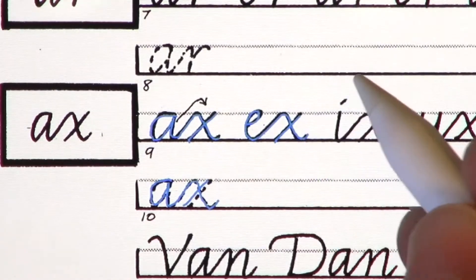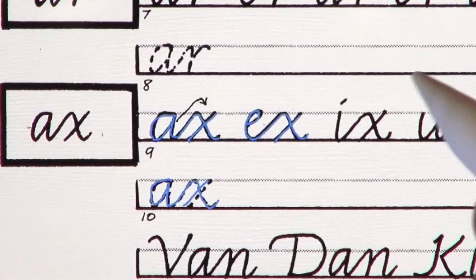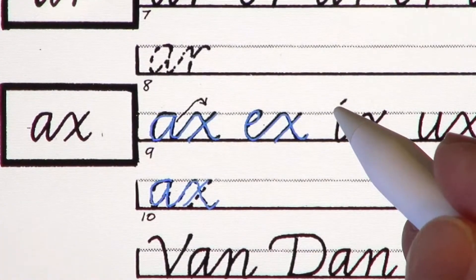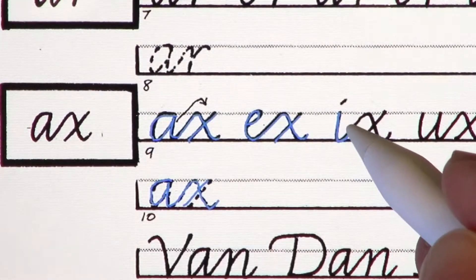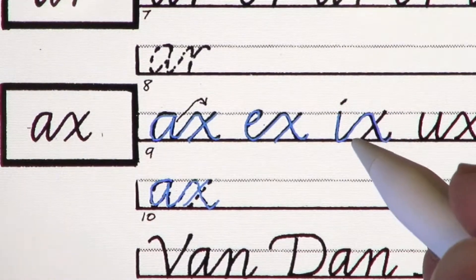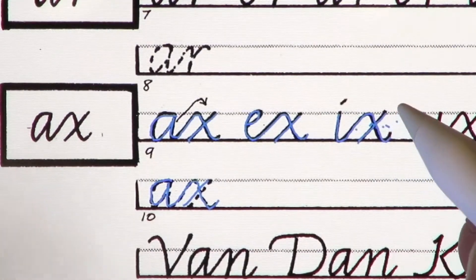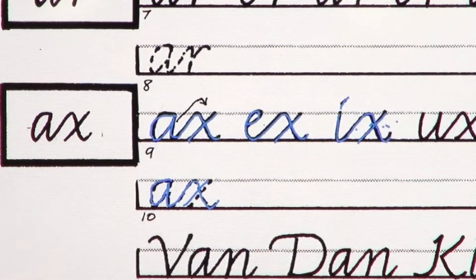And we want to follow with the diagonal up from the baseline to the waistline. Same diagonal join with the letter I into the X, soft angle entrance serif, soft angle exit serif, diagonal across, meet at the branching line. And then we dot the I.